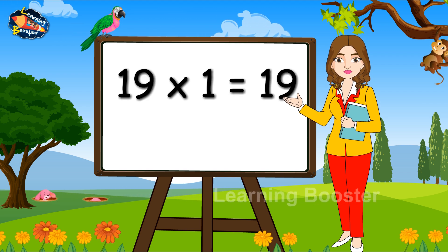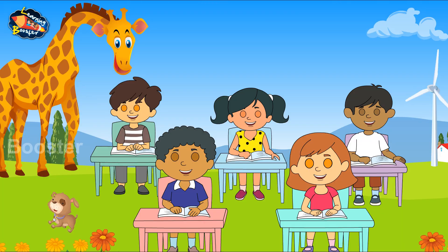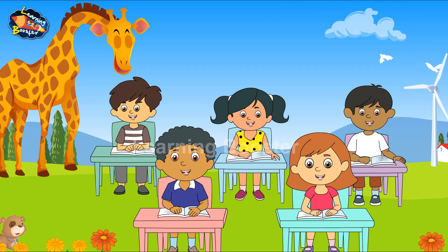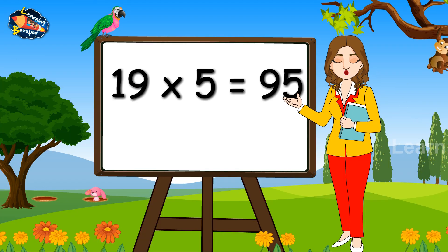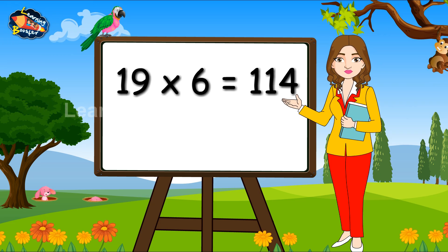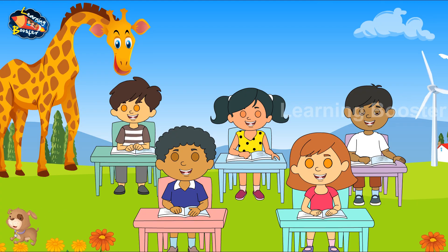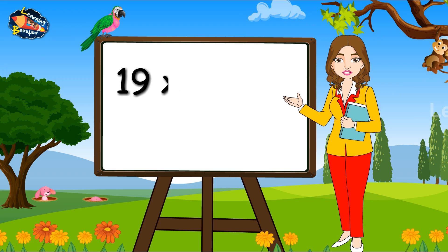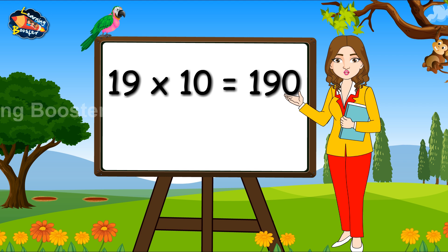Table of Nineteen. 19-1s are 19. 19-2s are 38. 19-3s are 57. 19-4s are 76. 19-5s are 95. 19-6s are 114.